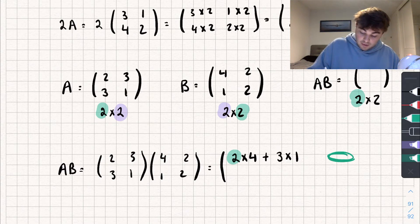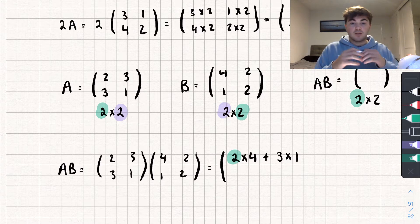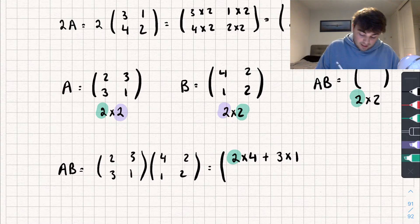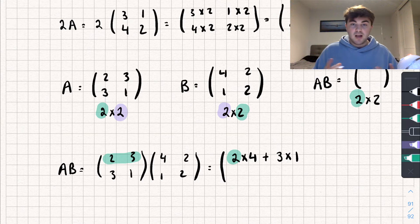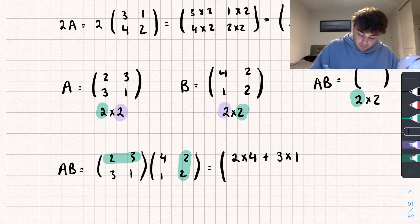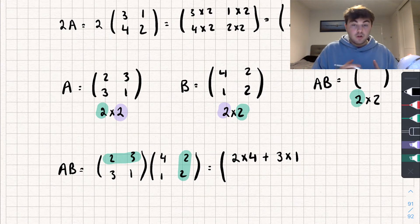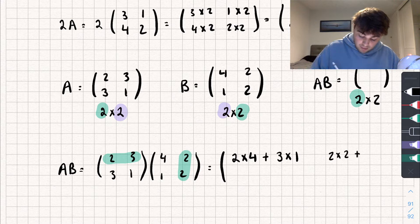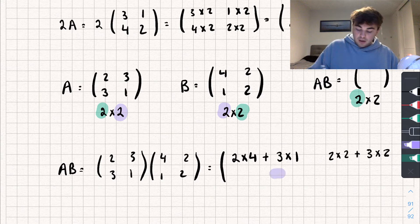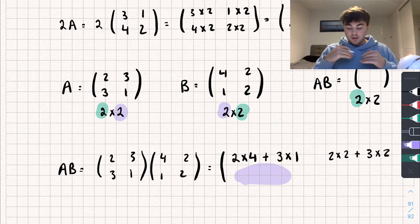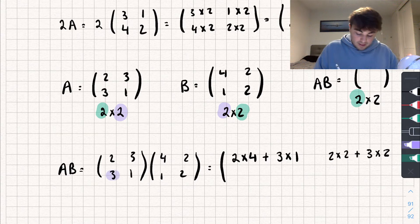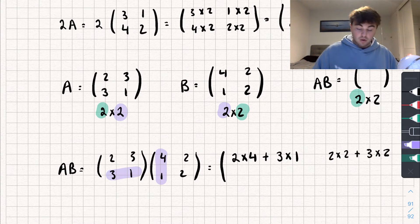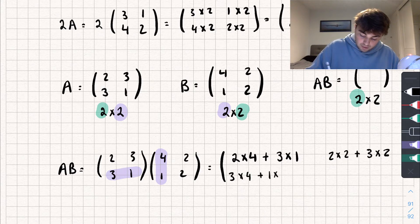Say I want to find the next element — the top right, so that's first row, second column. I'm going to take the first row of matrix A and do the same but with the second column of matrix B. So we're going to get 2 multiplied by 2, and then added on to that, 3 multiplied by 2. Now say I want the second row, first column. I'm going to take the second row of matrix A and multiply it by the first column of matrix B, so we do 3 times 4 and then add on 1 times 1.